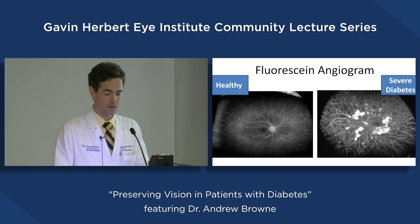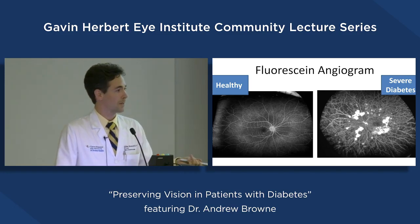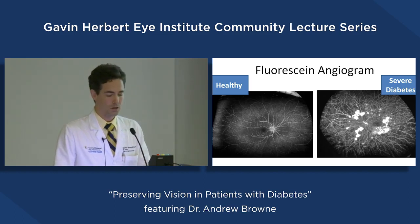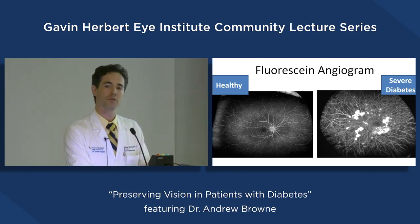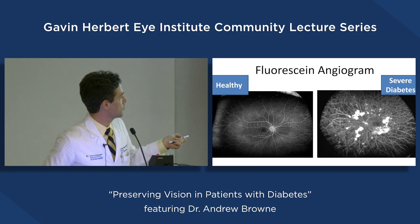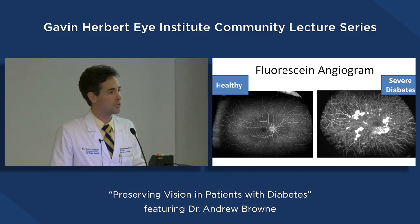A person with a severely affected fovea might see somewhere around 20-60 to 20-400 — only able to see the big E on the chart. We can also inject a dye into the arm to let it flow through the whole body and see it in the retina, showing the entirety of the retina. In someone with diabetes, there's a huge change — blood vessels not working, new blood vessels growing, and ultimately a high risk for vision loss.